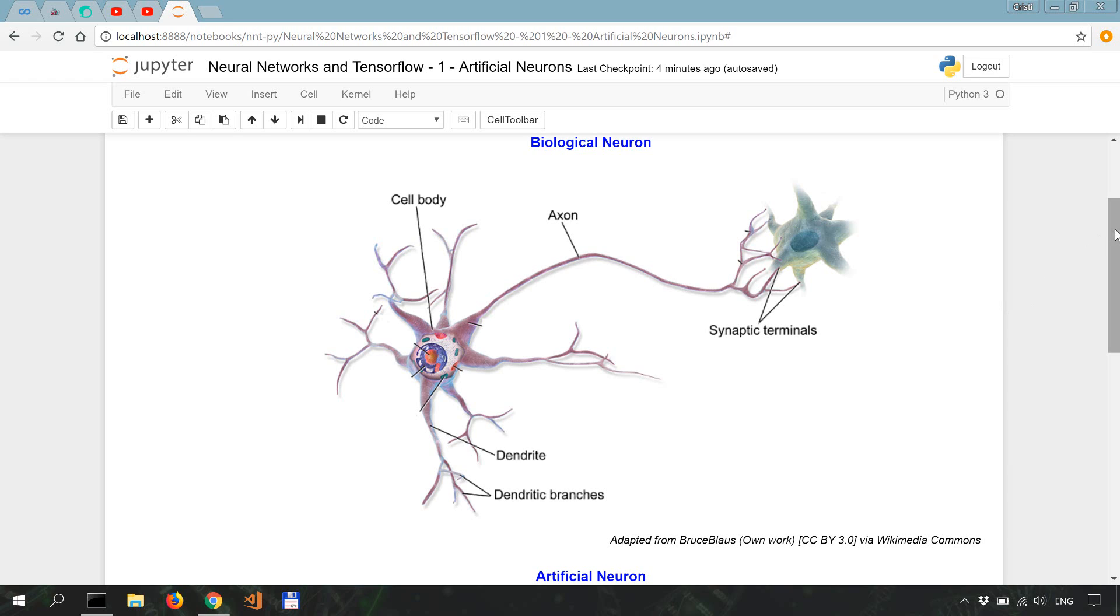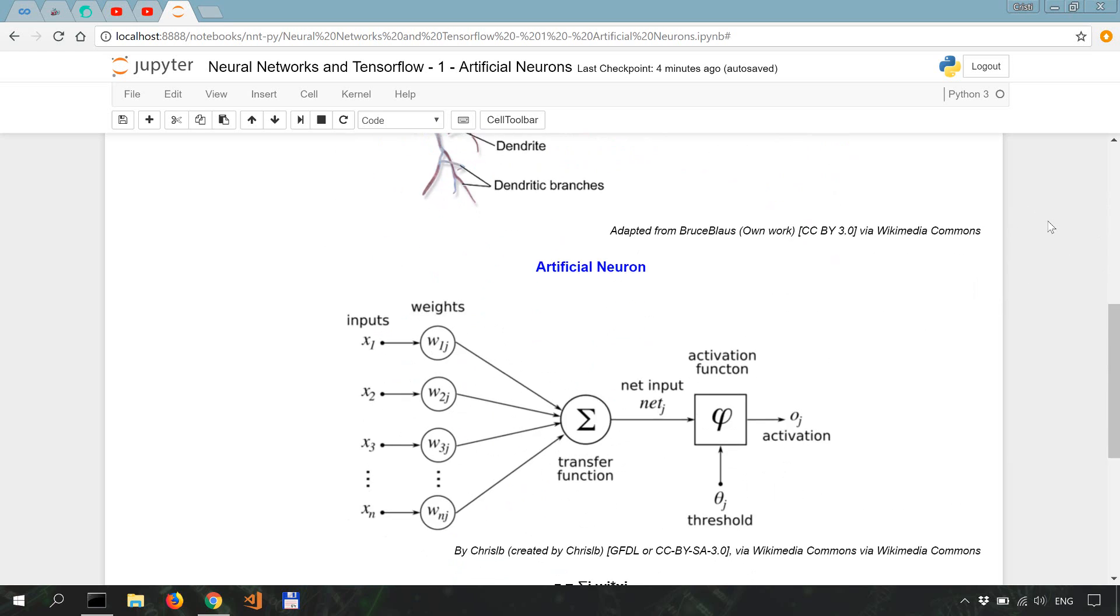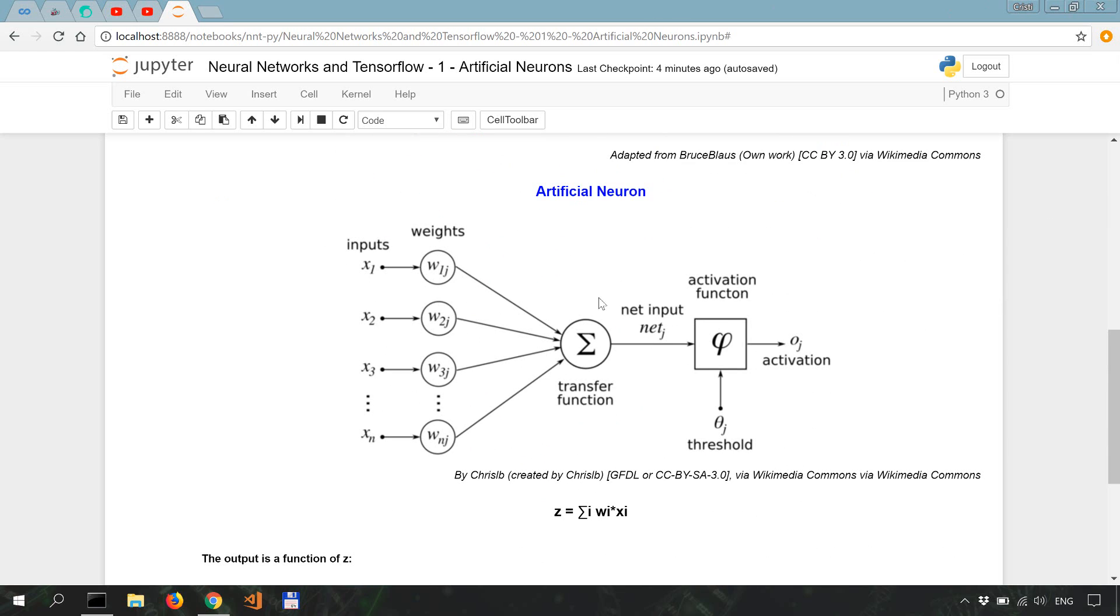So to reiterate, as shown in this schematic, we have X, which represents our inputs, which are multiplied by the weights, by their specific weights. They are summed together and they will give us the logit, which is known as Z. So Z is basically a summation over the inputs and weights.